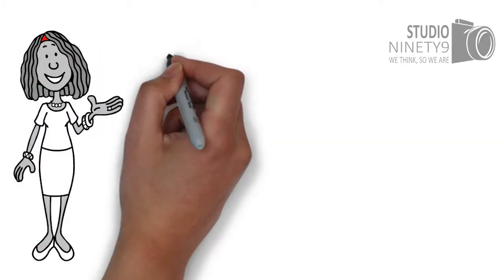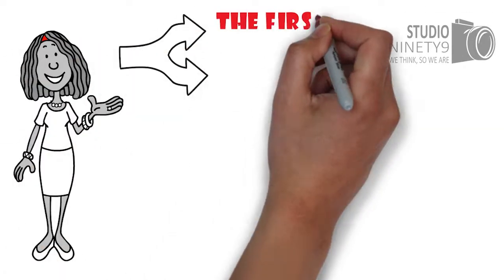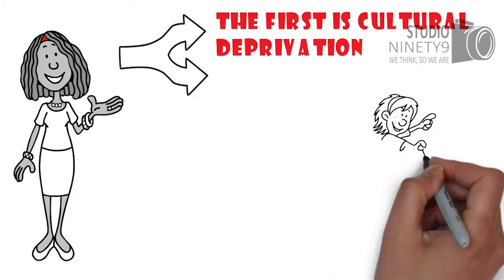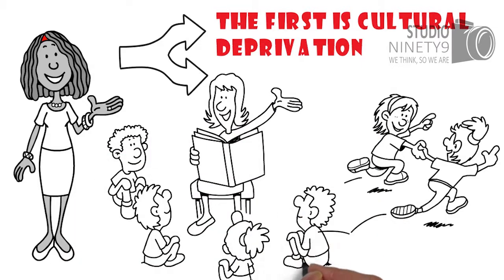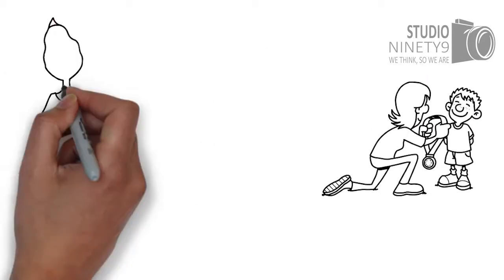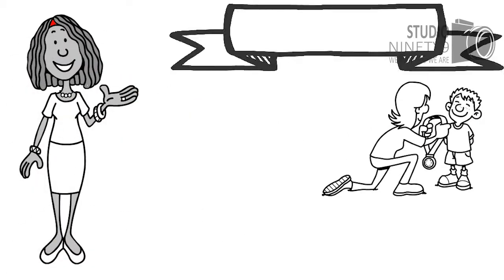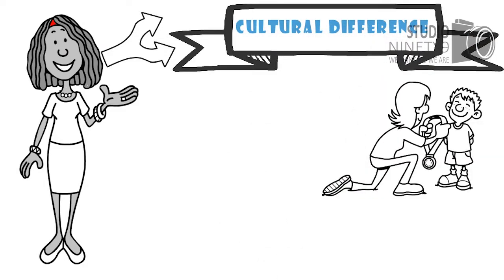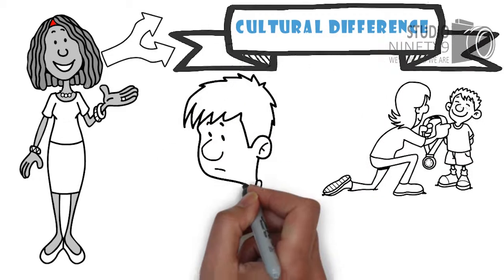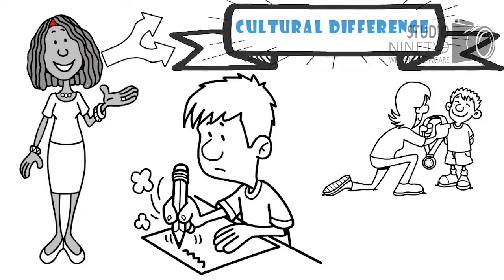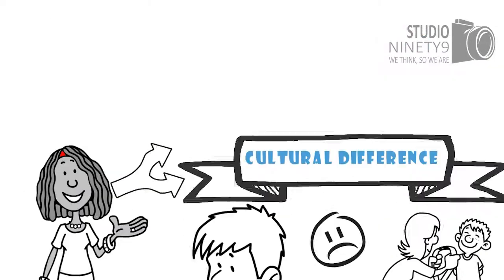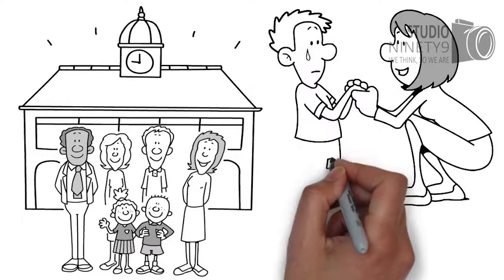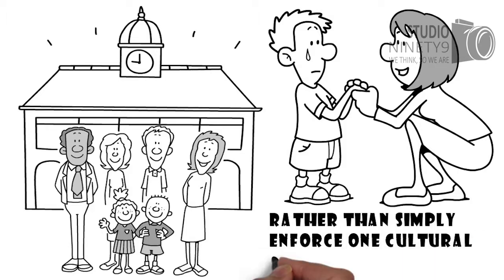According to Banks, there are two paradigms of multiculturalism. The first is cultural deprivation. It holds that challenged children — for example, low-income students — perform poorly in school because they are culturally deprived, and multicultural education aims to make up for this deficit. The second paradigm is cultural difference. It holds that challenged children perform poorly because they come from cultural backgrounds that have different implicit expectations than the mainstream culture. Schools thus need to change to accommodate these differences, rather than simply enforce one cultural standard.